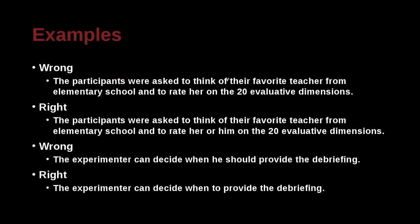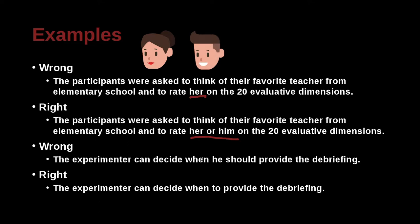The participants were asked to think of their favorite teacher from elementary school and to rate her on the 20 evaluative dimensions. The problem here is with 'her' — we want to say 'her or him' because the teacher may not have been female; it may have been male. The experimenter can decide when to provide the debriefing. So here we eliminate the need to have the pronoun.